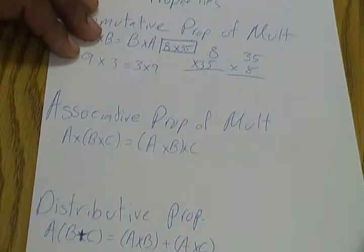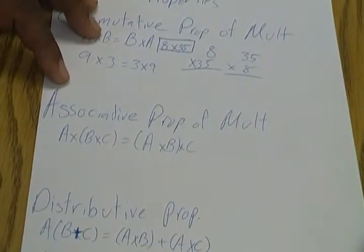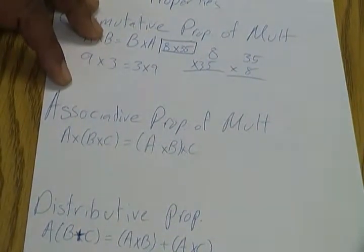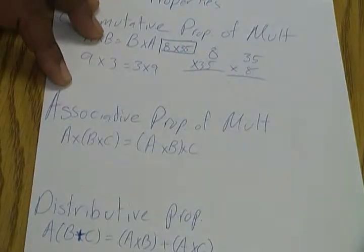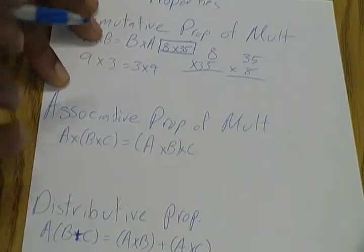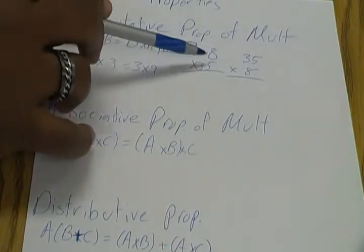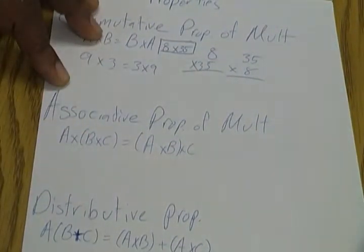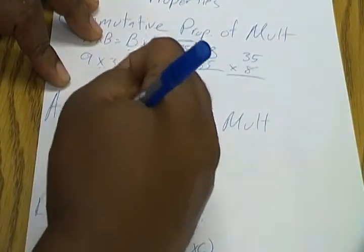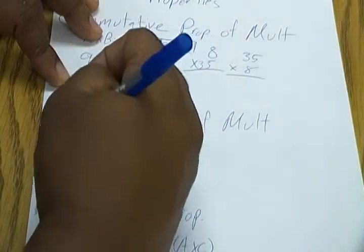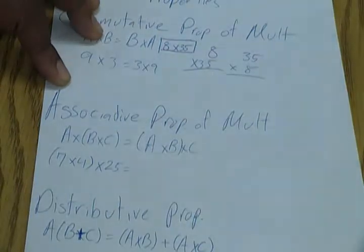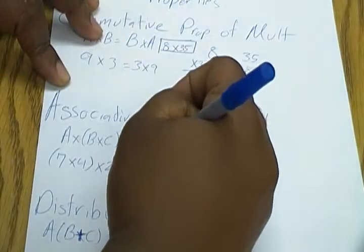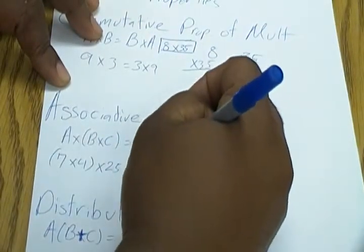The next one is the associative property of multiplication. A times, and then in parentheses B times C, equals in parentheses A times B times C. Now what this changes around is not so much the factors themselves but the order in what we do the factors in. So let's say for instance we have 7 times, in parentheses 4 times 25.